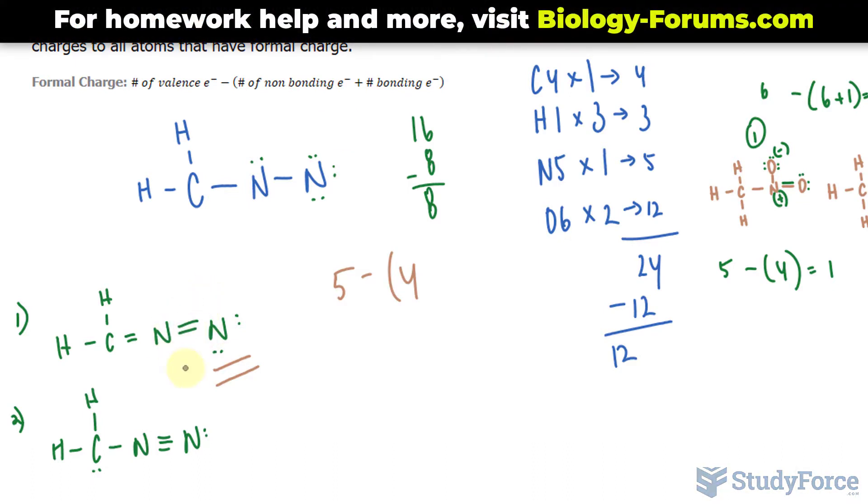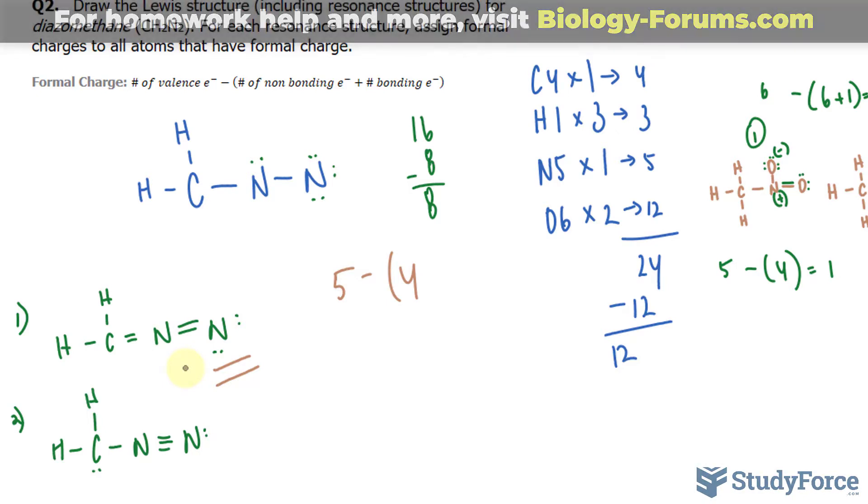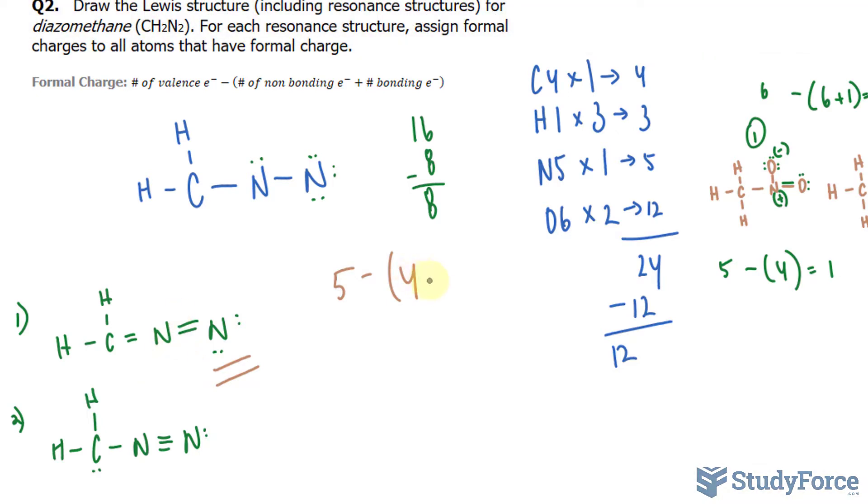plus the number of bonding electrons. We have 1, 2, 3, 4 in between these two nitrogens. We take that number, divide it by 2. Or simply, you just count the number of lines. So 4 plus 2, 5 minus 6 is negative 1. This has a negative 1 charge. What about this nitrogen? 5 minus no lone pairs, plus half the number of bonding electrons. So 8 divided by 4 is 4. This is positive 1. Doing that for carbon, you should end up with 0, or neutral.